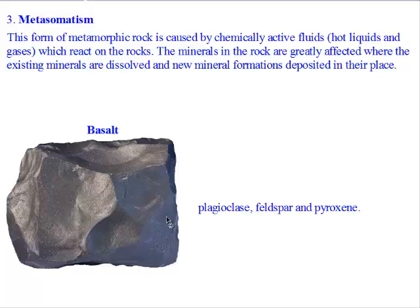That is, the plagioclase, feldspar, and pyroxene may be dissolved and new minerals formed. Or, it may be an addition or a subtraction of these minerals — that is, other minerals will be added to the existing minerals, or some of the minerals will be taken away from the existing minerals.